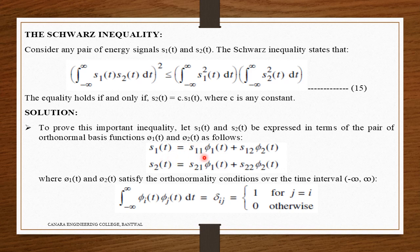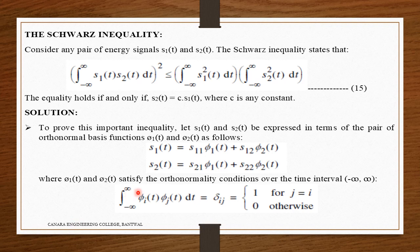S1(t) = S11·pi_1(t) + S12·pi_2(t). S2(t) = S21·pi_1(t) + S22·pi_2(t), where pi_1(t) and pi_2(t) satisfy the orthonormality condition over the time interval minus infinity to plus infinity. The integration of pi_i(t)·pi_j(t) dt equals delta_ij, which is 1 for i=j and 0 otherwise. This was proved in the previous video.